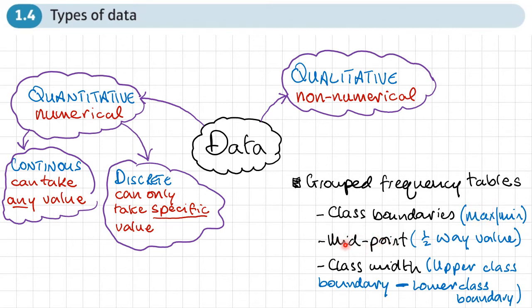Midpoint, you would have come across this before when you're working out maybe the mean from a frequency table. This is the halfway value between the maximum and the minimum. So you could actually add the maximum and the minimum together divide by two to find a midpoint.